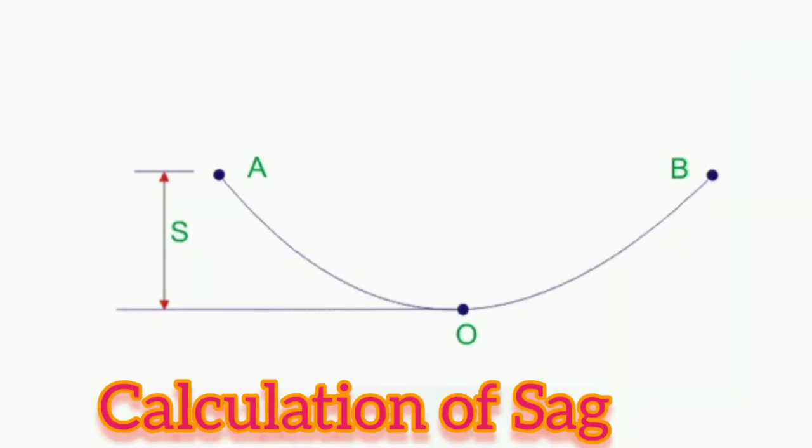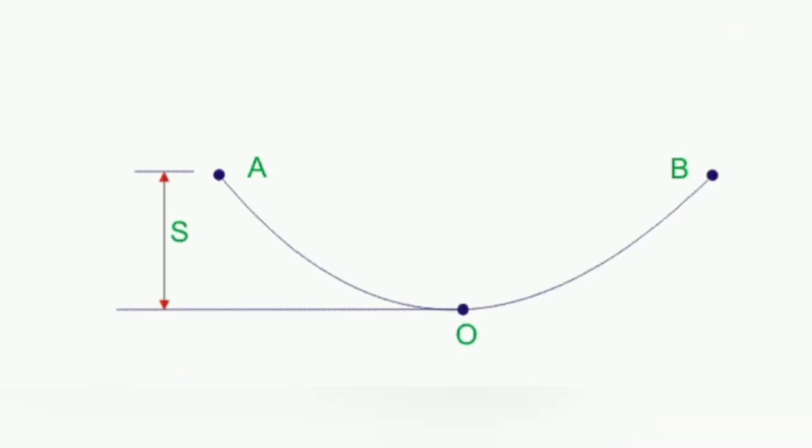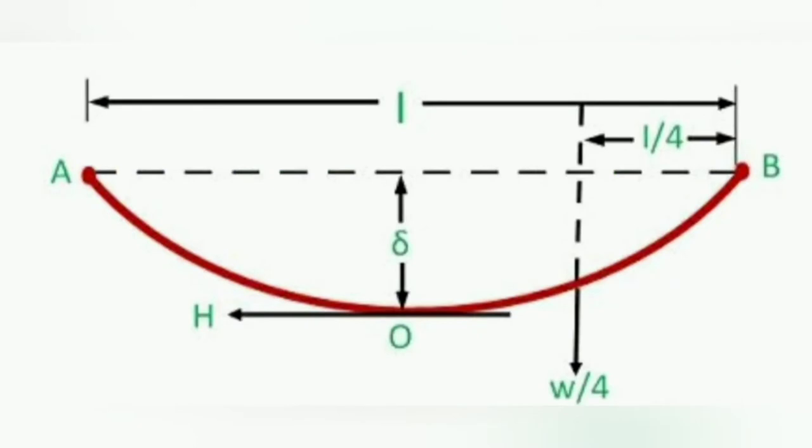Now we will see calculation of sag. In an overhead line, the sag should be so adjusted that tension in the conductors is within safe limits. So the sag calculation is very much needed. We shall now calculate the sag when supports are at equal levels.